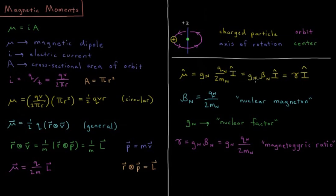which is equal to the nuclear factor times a new quantity called the nuclear magneton times our angular momentum operator, where our nuclear magneton is now defined as the charge of a nucleus divided by 2 times its mass.